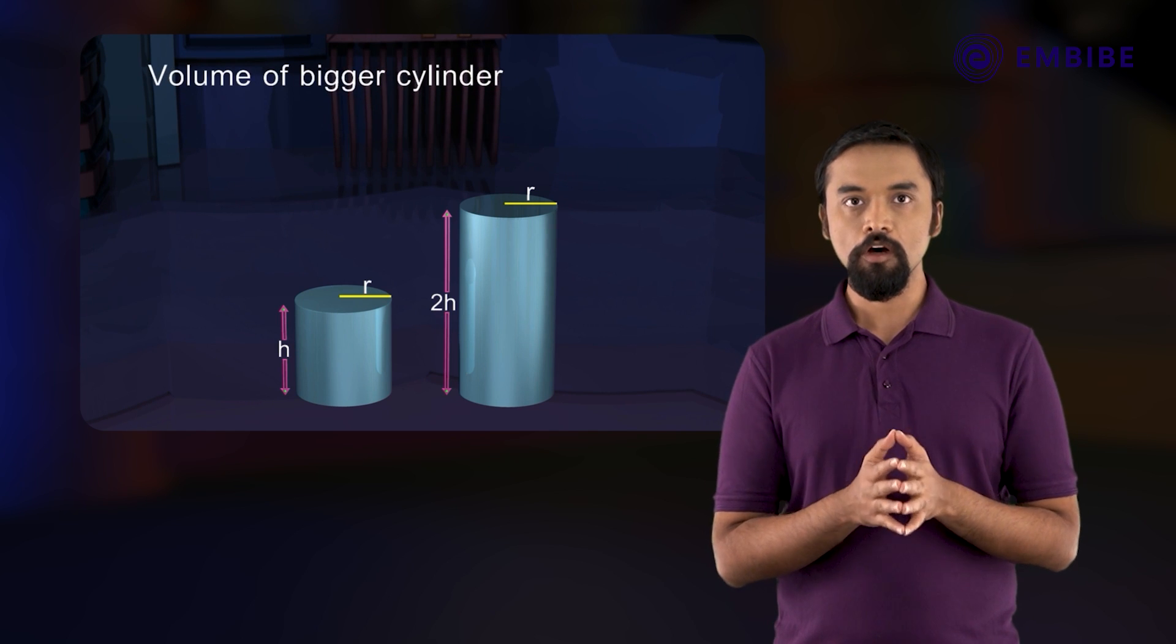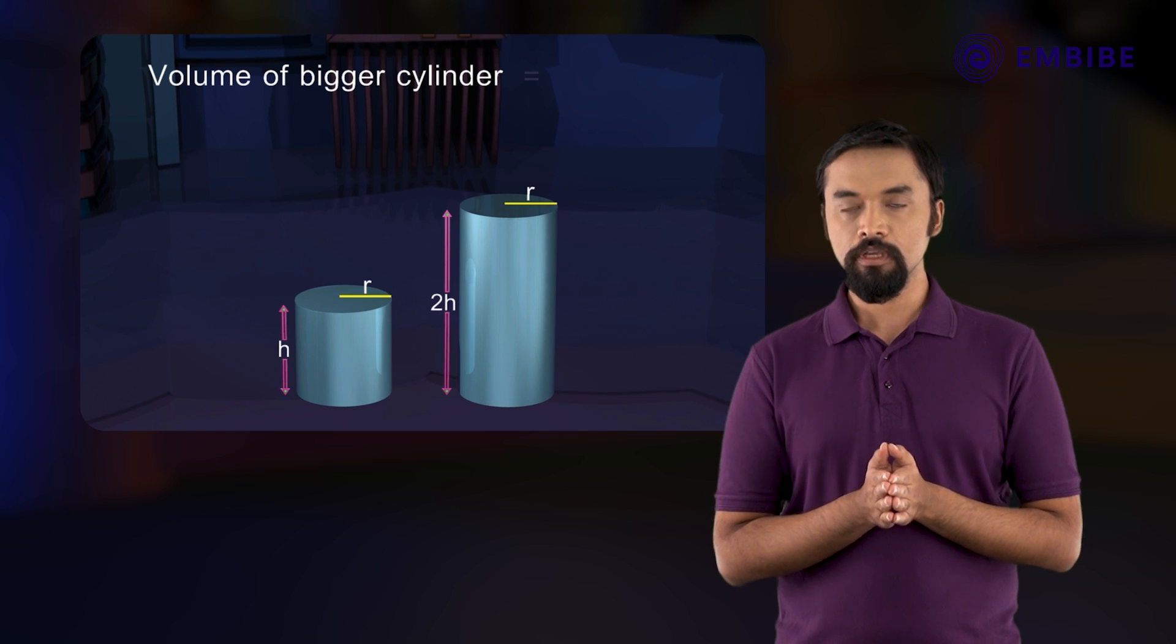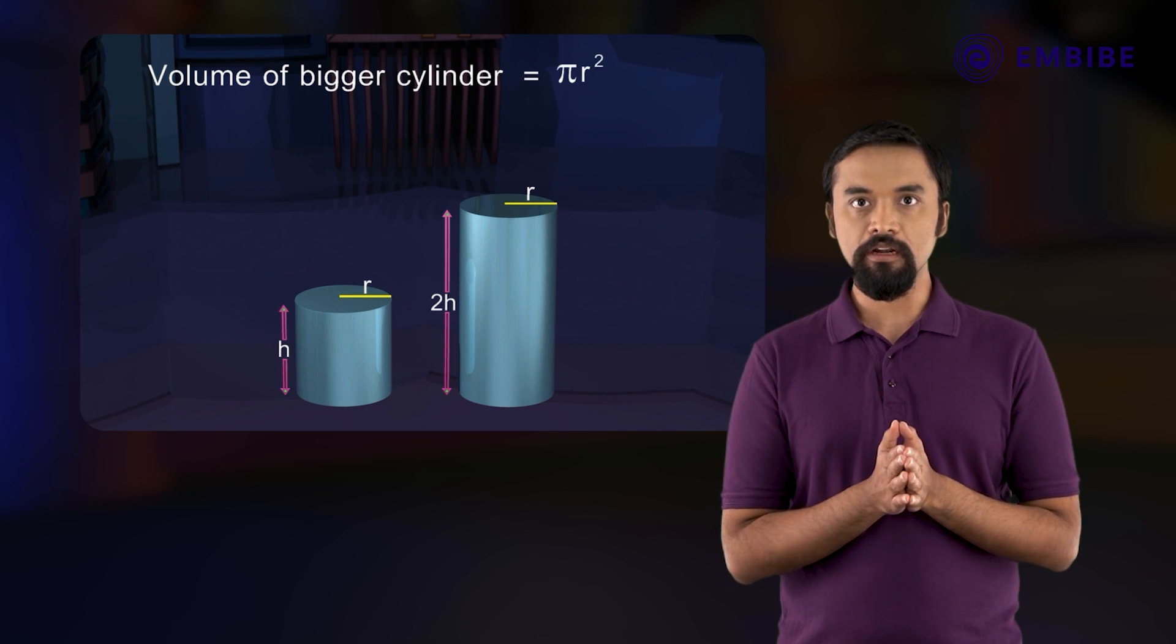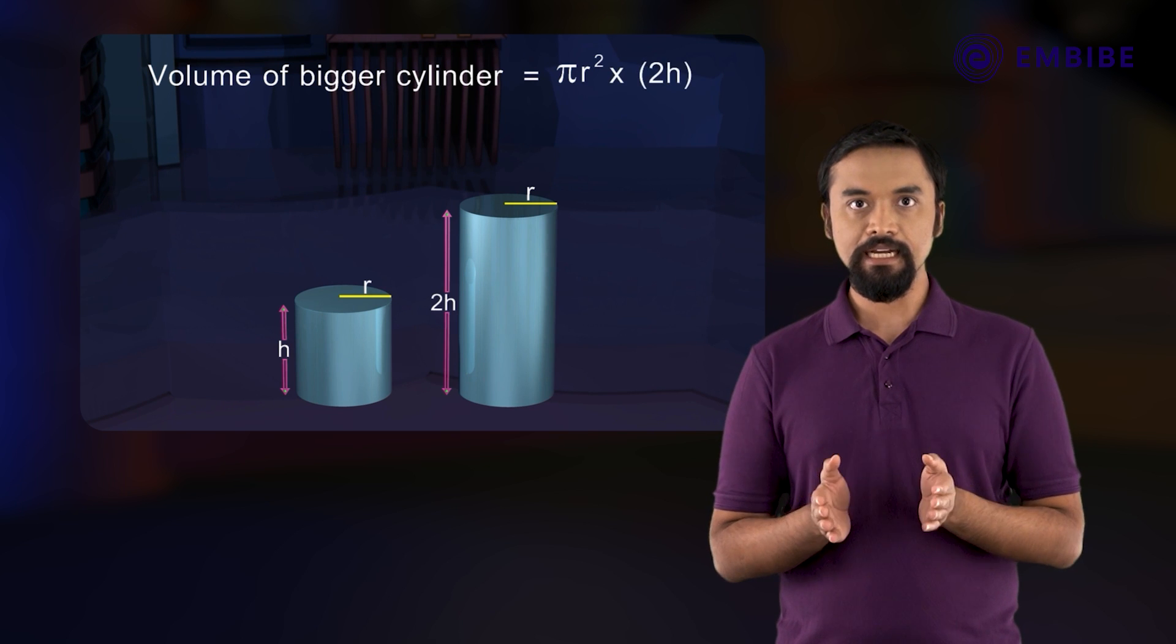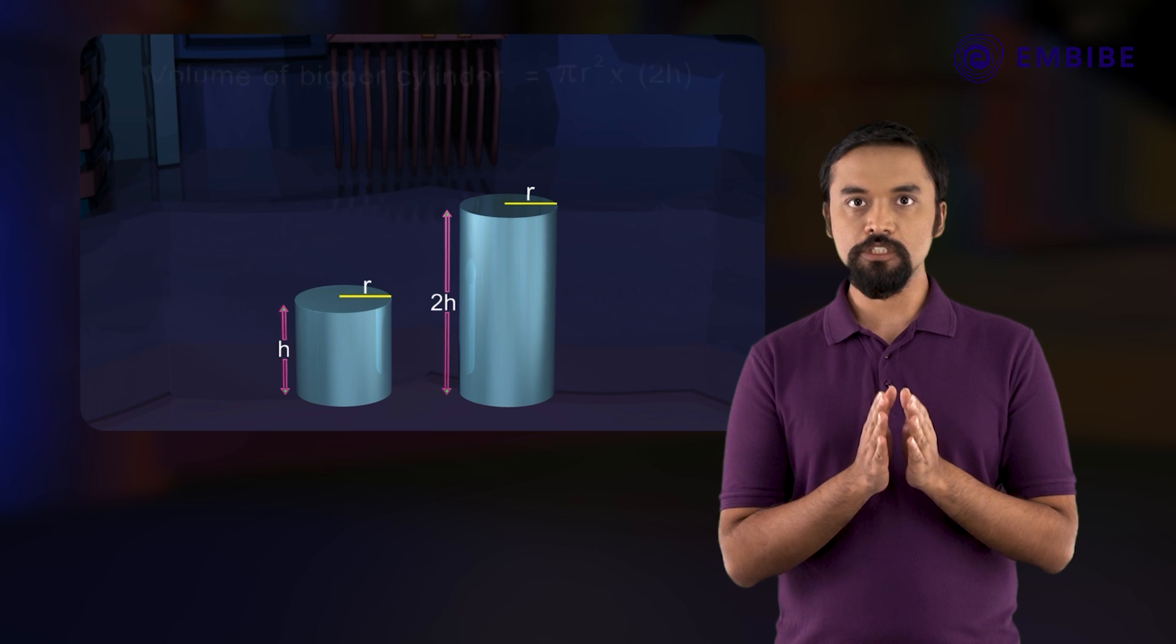Volume of the bigger cylinder is equal to π r squared multiplied by 2h, and volume of the smaller cylinder is π r squared h.